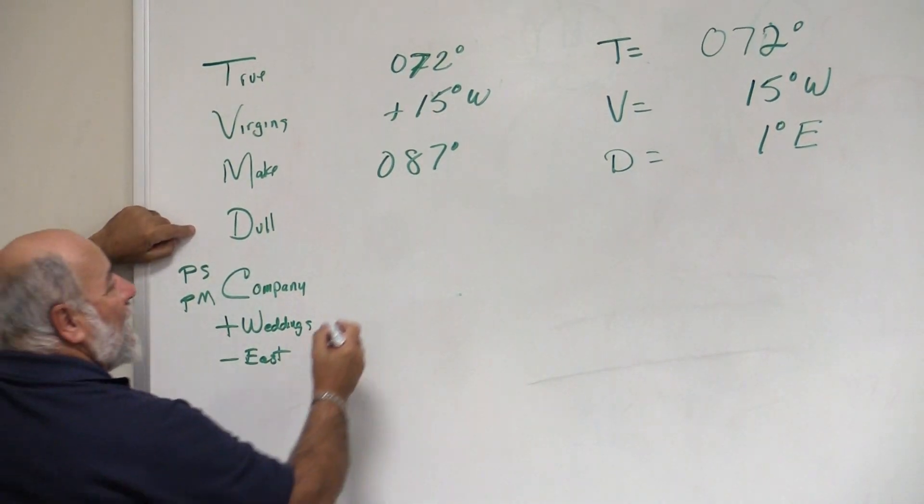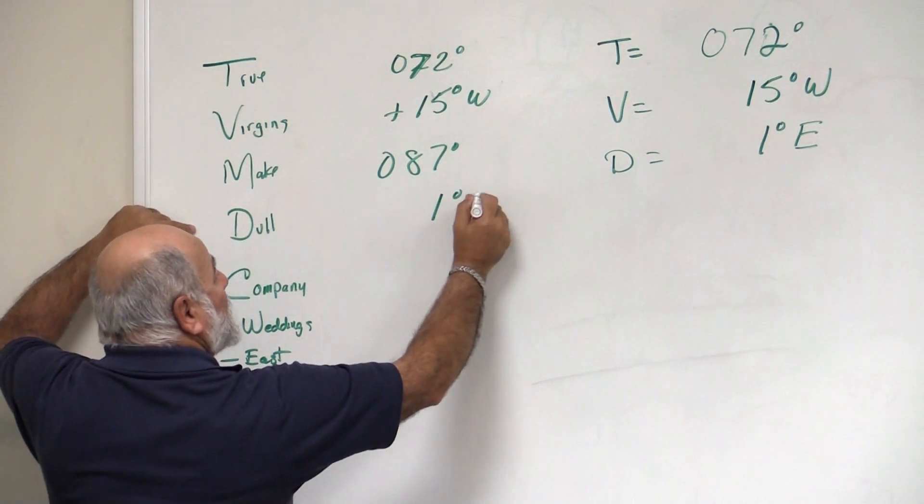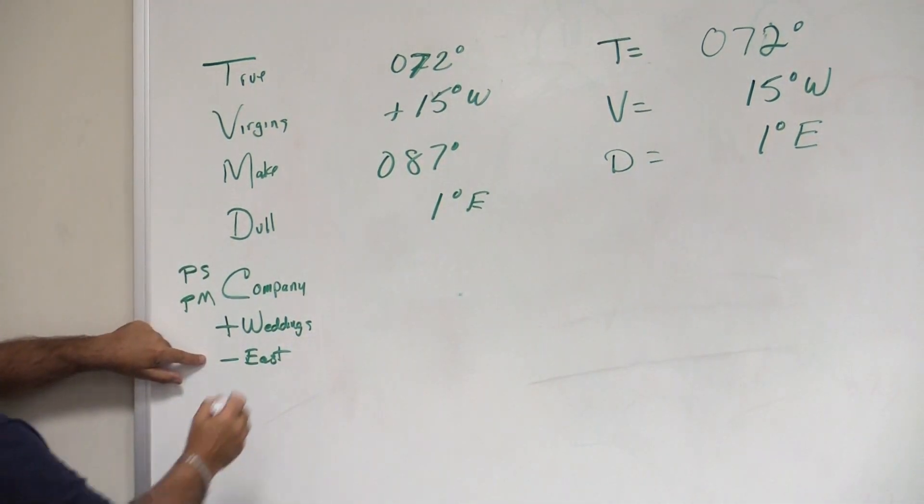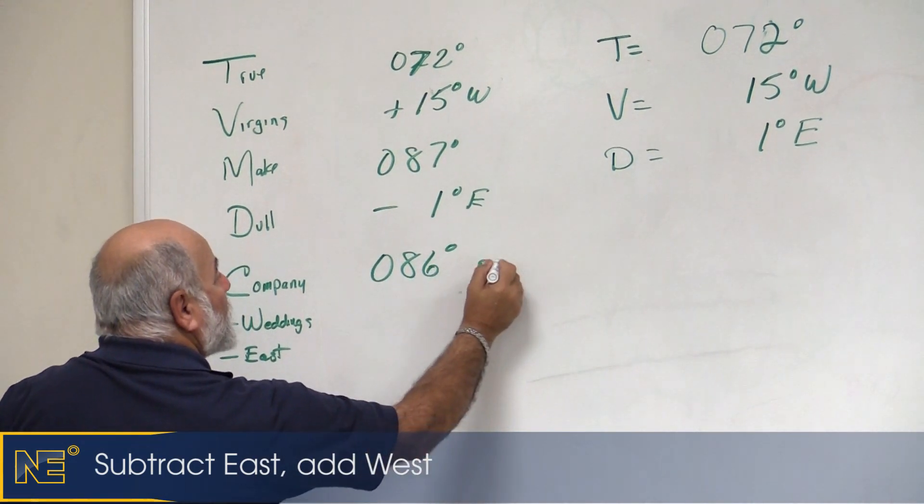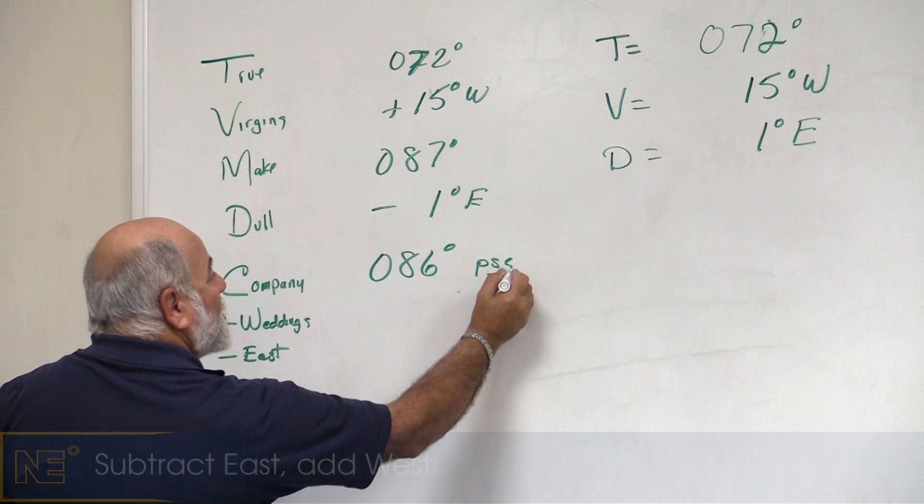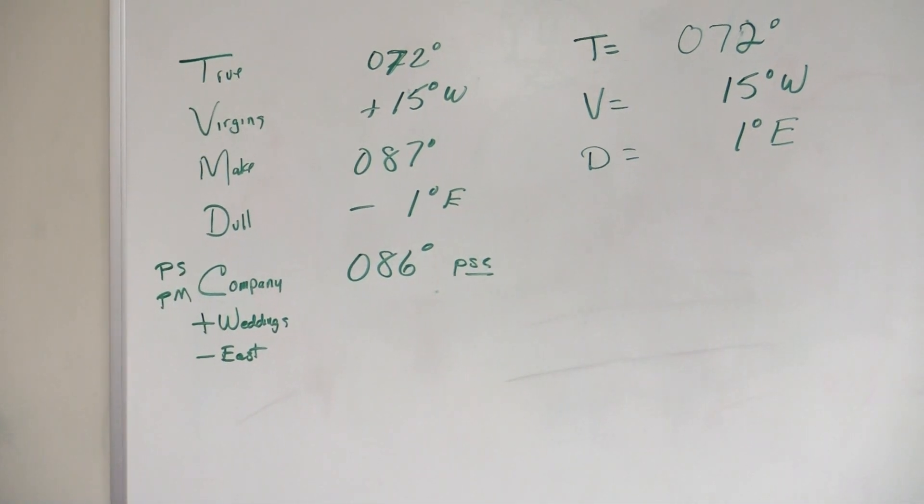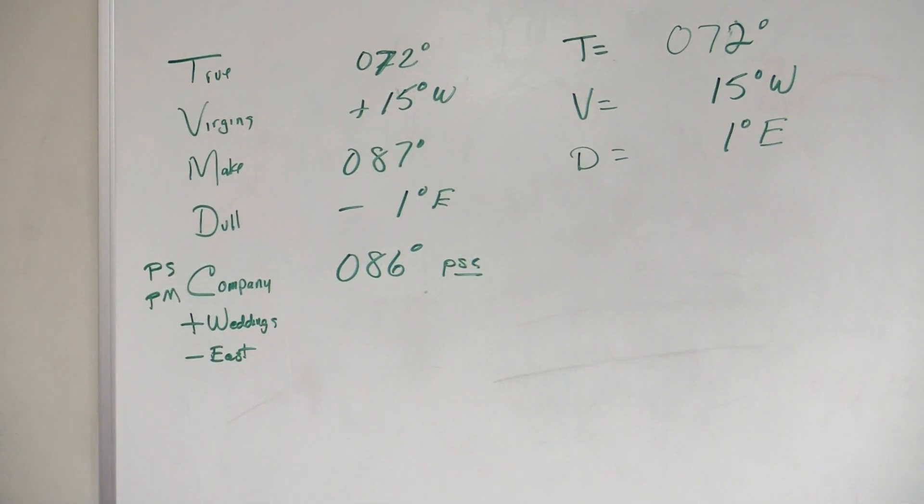Deviation for that heading would be 1 degree easterly, and because we subtract east, we get 086 degrees for our per ship's compass, for our compass heading. And that's what we would steer, looking at our compass, to make good our course of 072 degrees true.